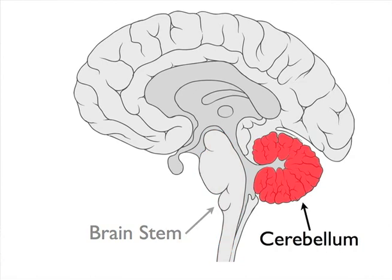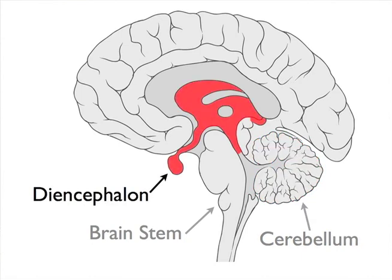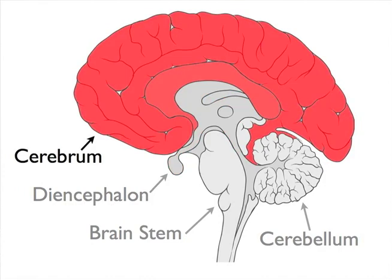The cerebellum, which is involved in, among other things, motor control, fine motor movement, balance, posture. The diencephalon, which primarily is involved in regulatory functions. And the cerebrum, which is involved in high level functions like language, thought, perception.